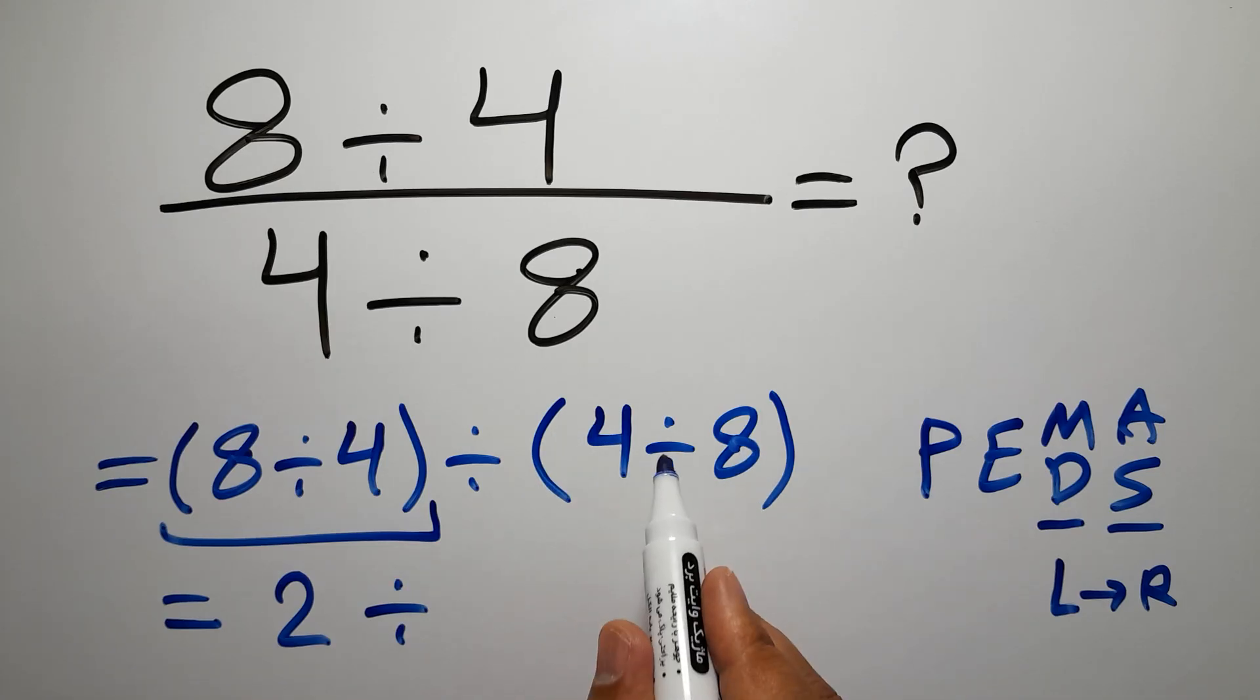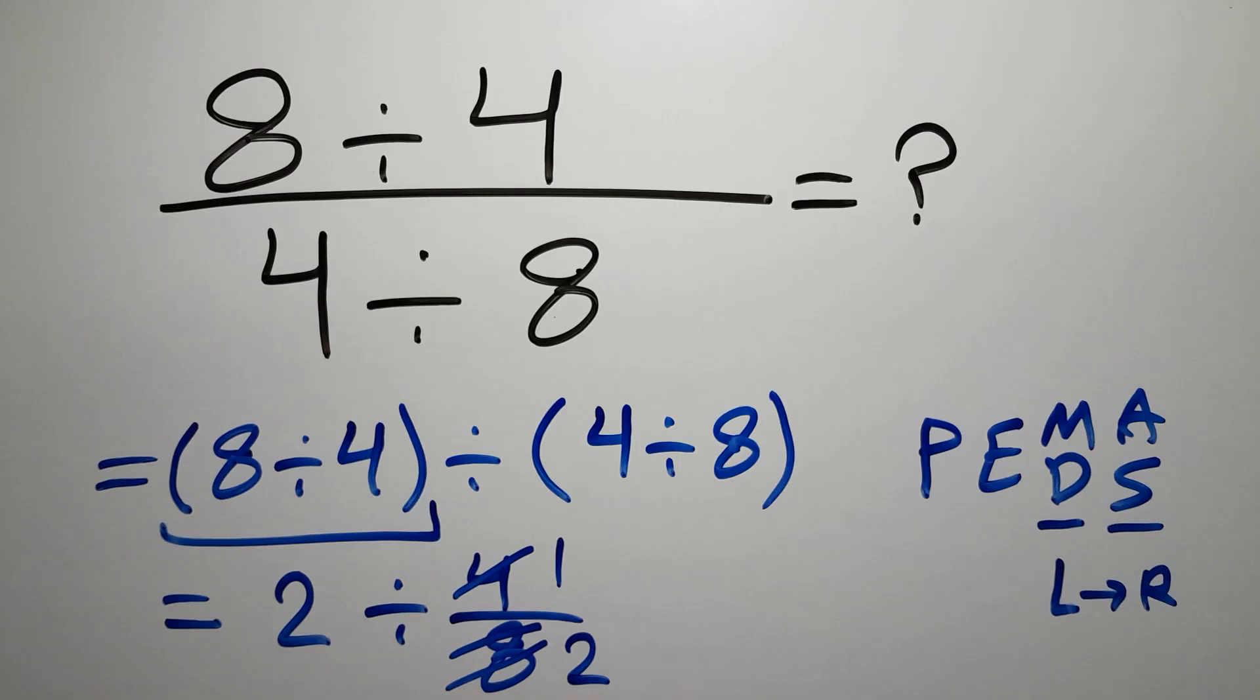we have 4 divided by 8. We can write 4 over 8. 4 divided by 4 gives us 1 and 8 divided by 4 gives us 2. So we have 2 divided by 1 half.